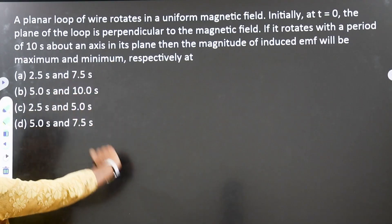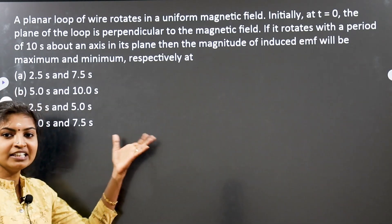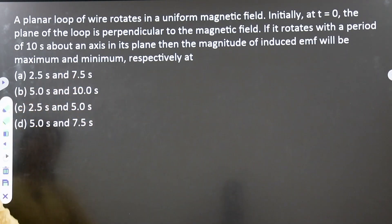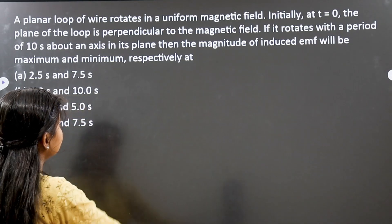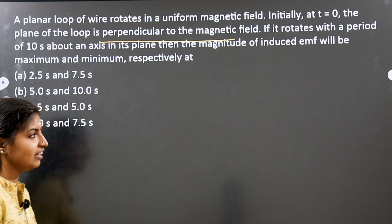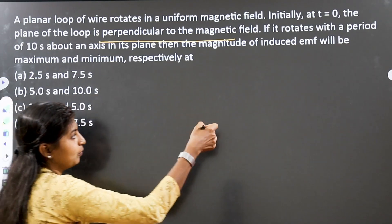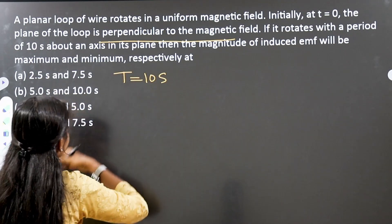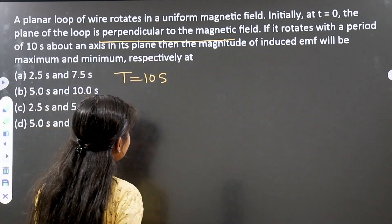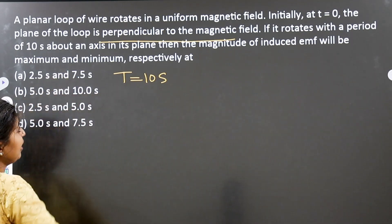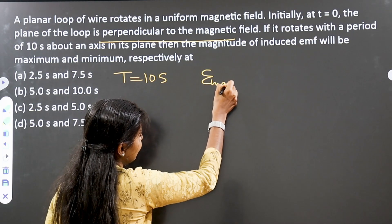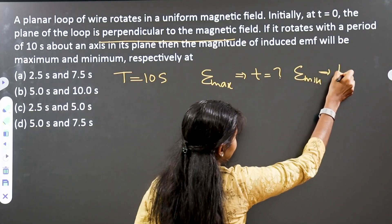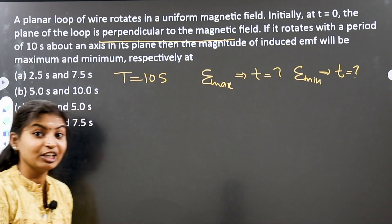This is our first question. A planar loop of wire rotates in a uniform magnetic field. Initially, at t equal to 0, the plane of the loop is perpendicular to the magnetic field. If it rotates with a period of T equal to 10 seconds, about an axis in its plane, then the magnitude of the induced EMF will be maximum and minimum respectively — we have to find the induced EMF maximum time and induced EMF minimum time.